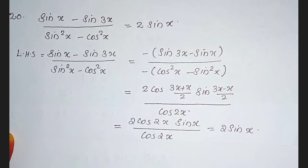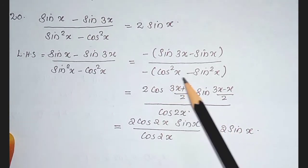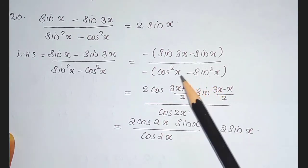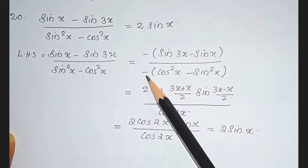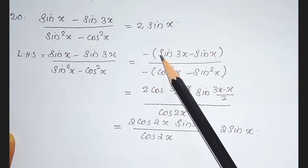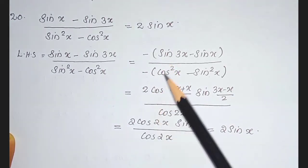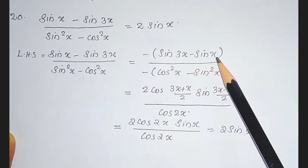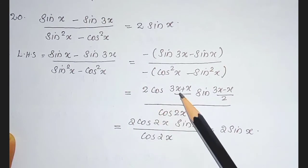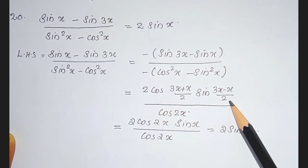Why do we take negative outside? We know the equation cos squared x minus sin squared x. We want to substitute that equation in the denominator, so we take negative outside. At the same time, we take negative outside from the numerator also. Then negative and negative are cancelled. Sin 3x minus sin x can be written as 2 cos((3x+x)/2) sin((3x-x)/2) using that identity.